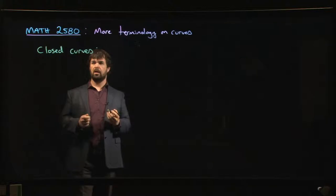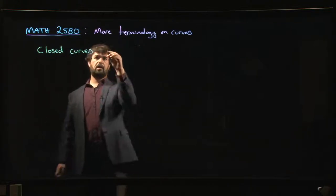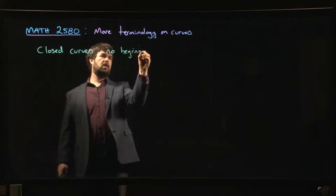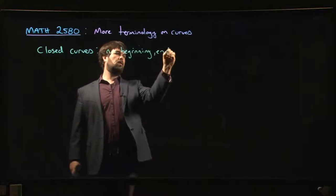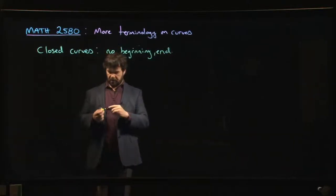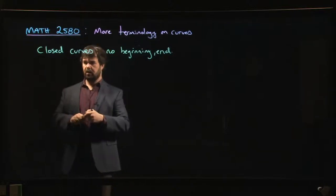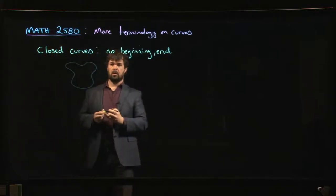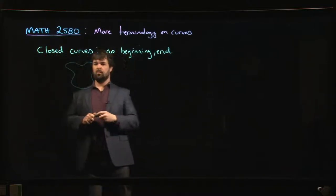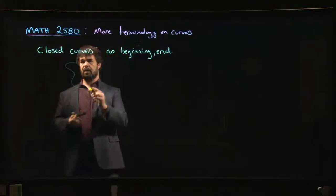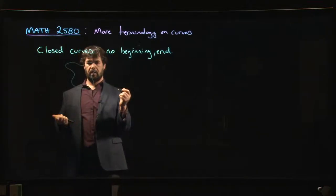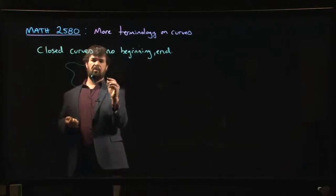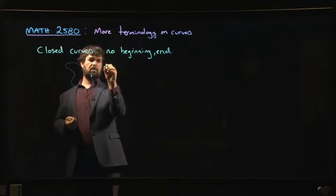A closed curve is one where there's no beginning and no end. Think of a circle — any kind of object that forms a loop. There's no beginning, no ending; it goes all the way around. If you were to parameterize this curve, you might still want to parameterize it even though it loops.